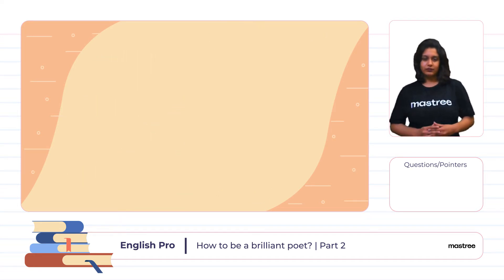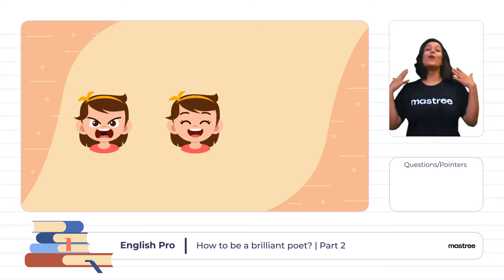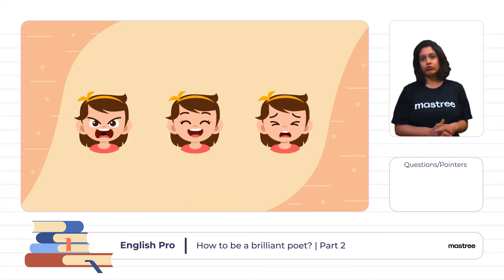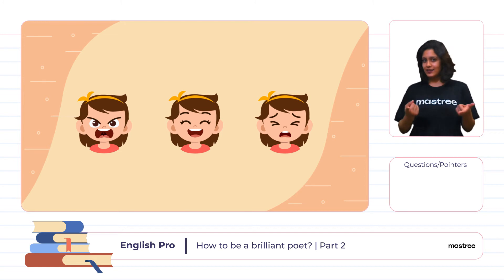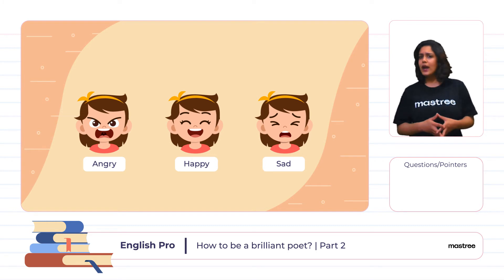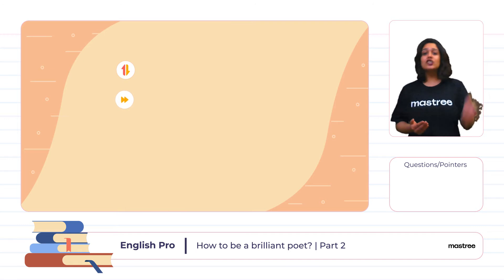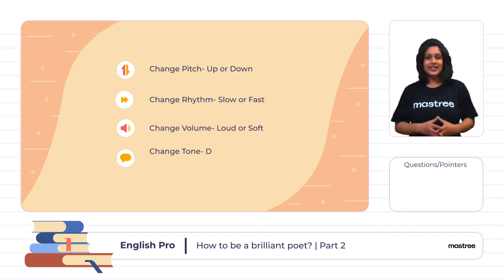Let's try something out. 'I want to go home.' 'I want to go home.' 'I want to go home.' It's the same sentence, but can you figure out the difference? Did you notice a difference in the way I spoke? Were you able to figure out my tone and my mood? We can change the tone and mood of a poem by changing the pitch, rhythm, or the volume while reciting it.